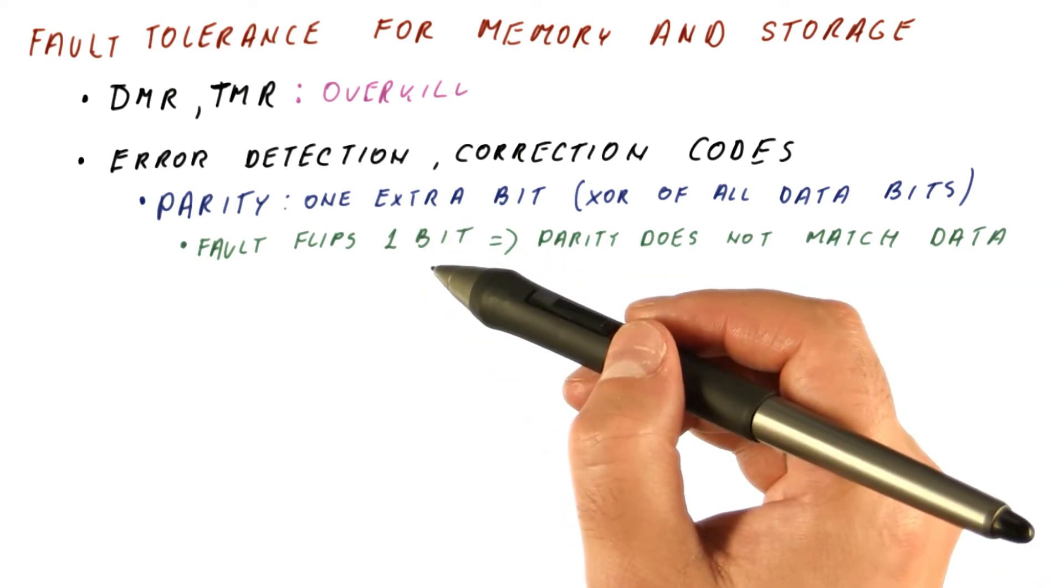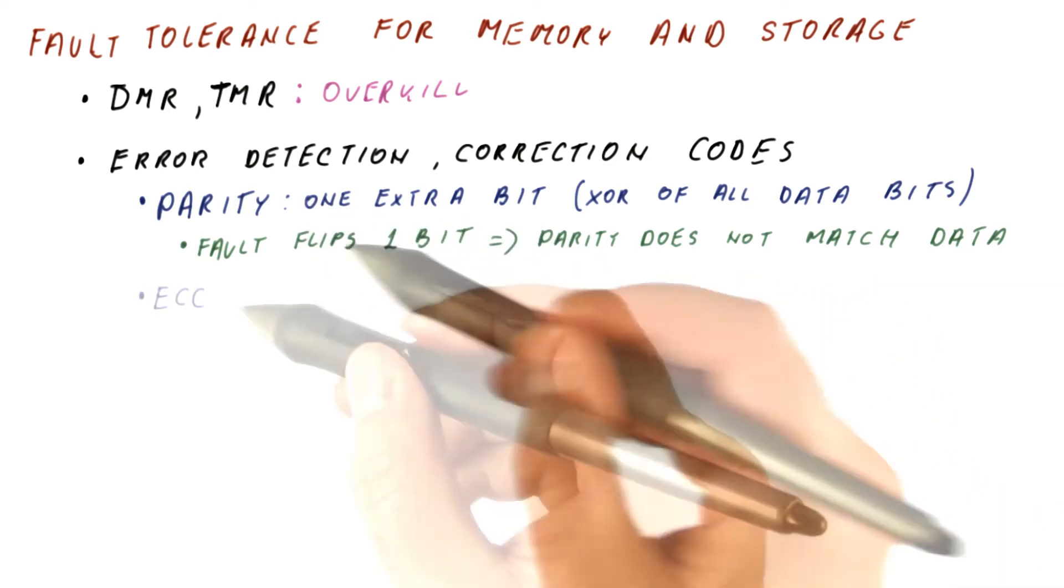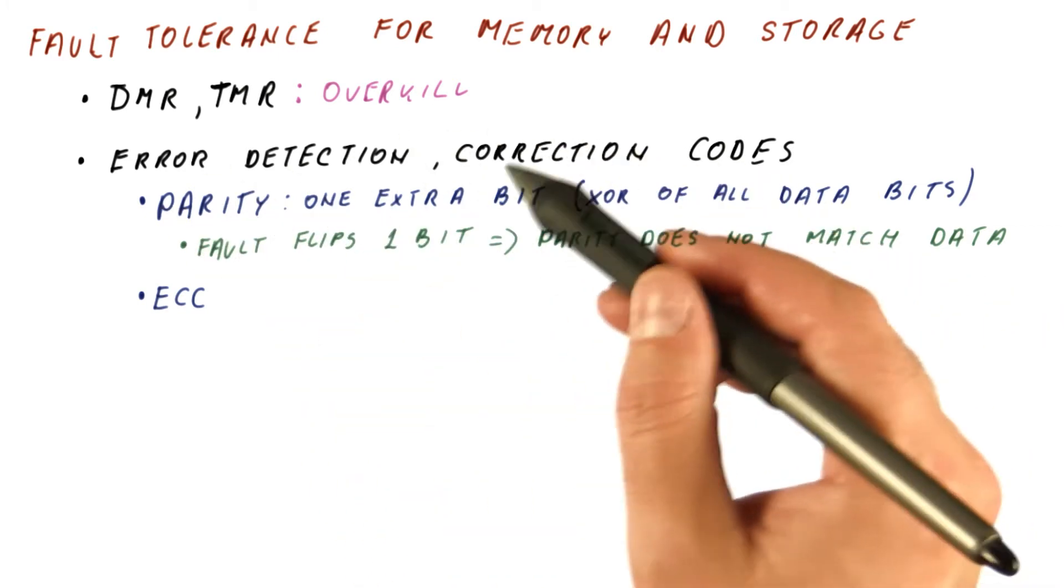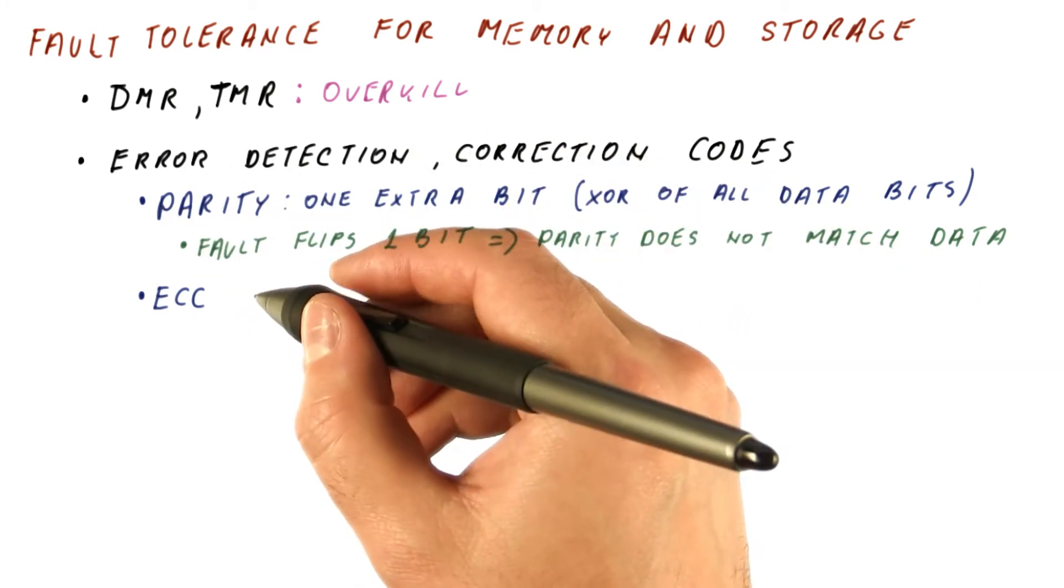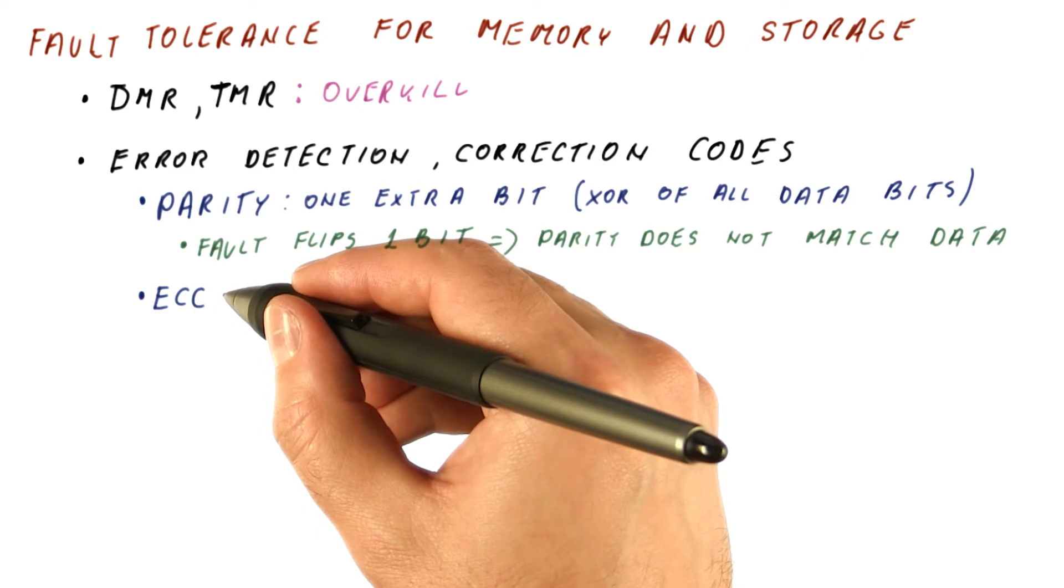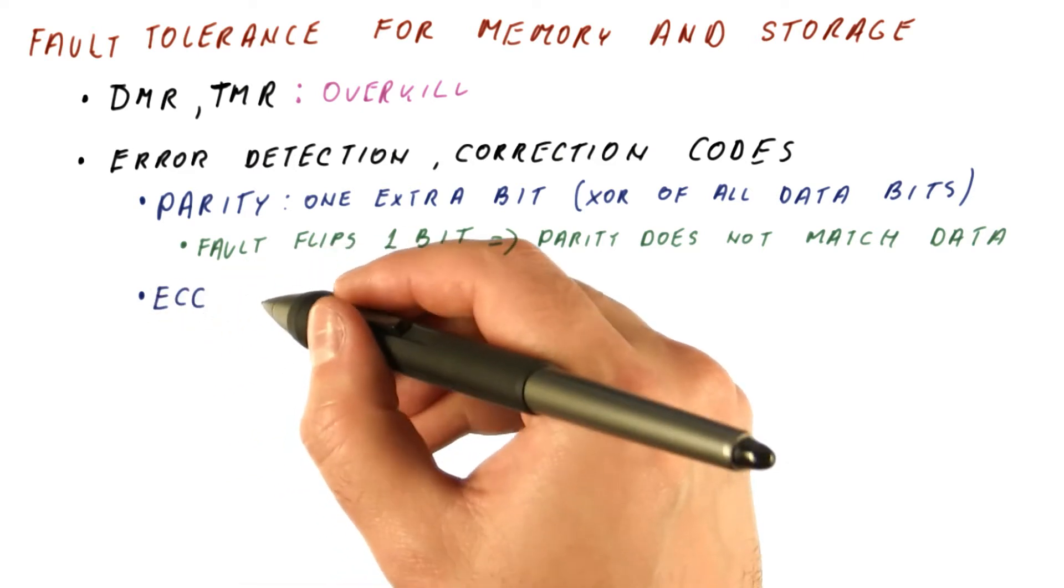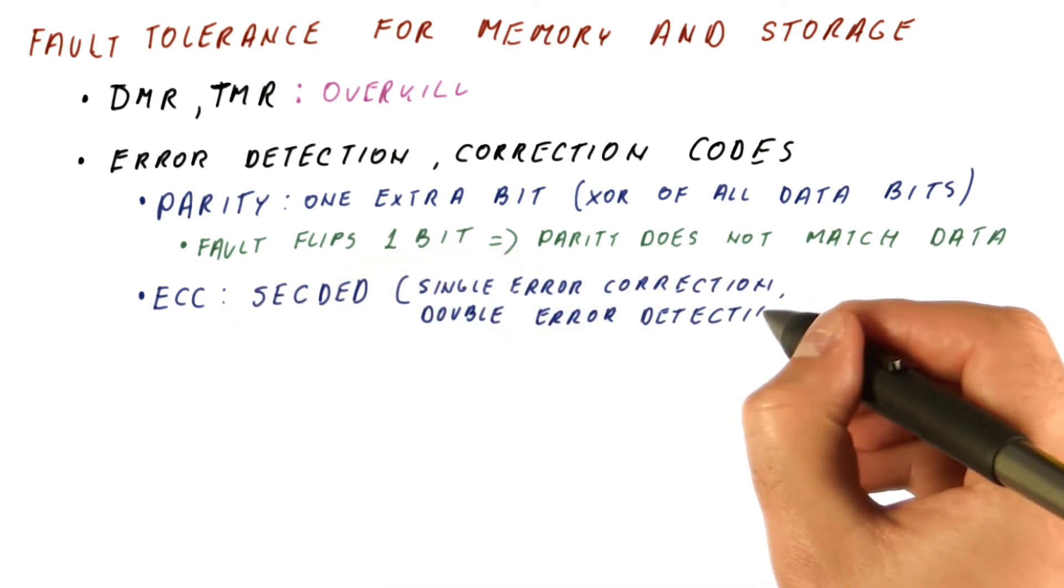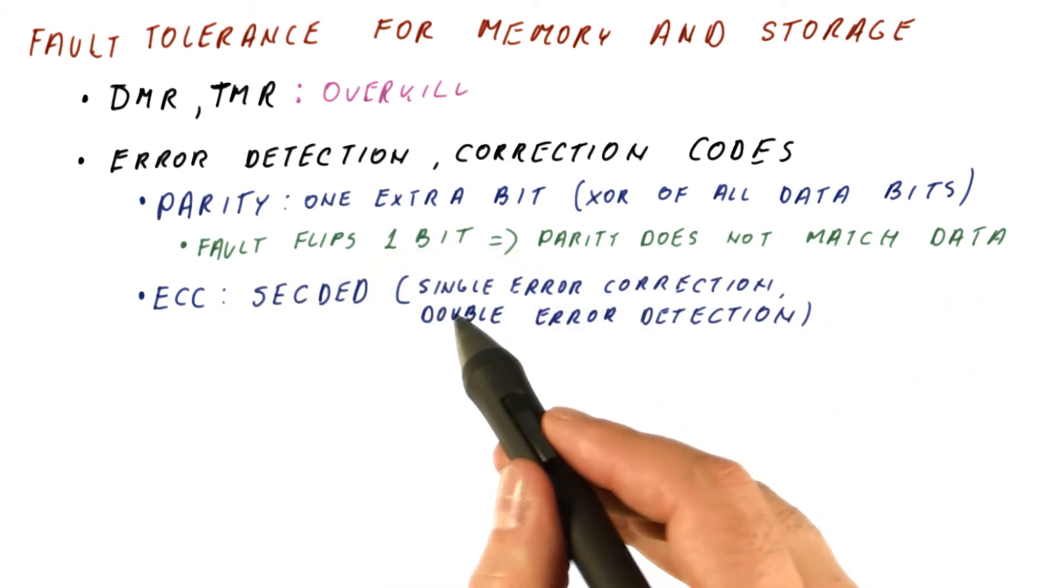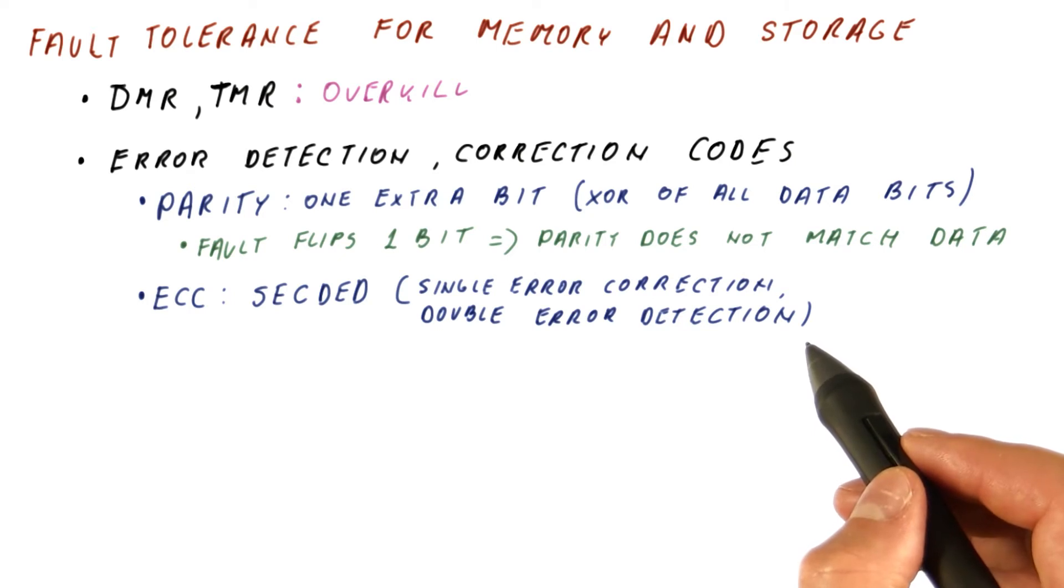The next level of error detection and correction codes is the so-called ECC, which stands for Error Correction Code. A typical example would be SEC-DED codes, or Single Error Correction and Double Error Detection codes.